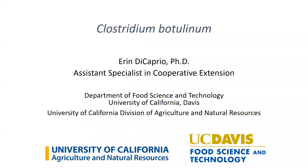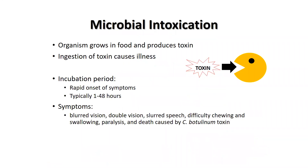The most important foodborne pathogen when it comes to home canning is Clostridium botulinum. Foodborne intoxications are caused by the consumption of toxin produced by bacterial growth in food. In this case, the toxins are already present in the food, and it is the ingestion of that preformed toxin in the food — not the bacteria — that leads to illness. Clostridium botulinum is a spore-forming anaerobic bacteria.